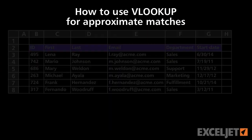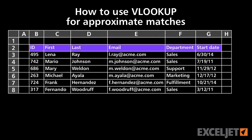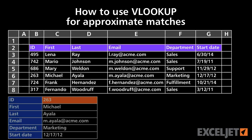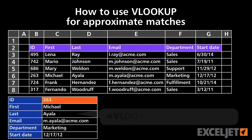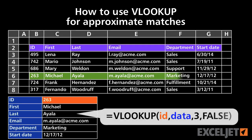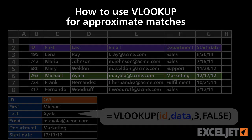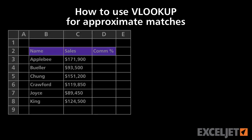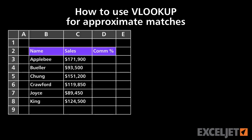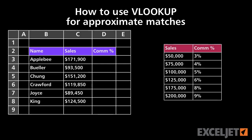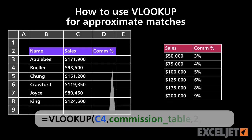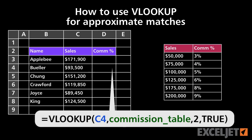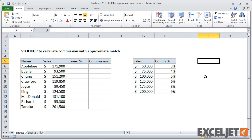In a lot of cases, you'll use VLOOKUP to find exact matches based on some kind of unique ID. But there are many situations where you'll want to use VLOOKUP to find non-exact matches. A classic case is using VLOOKUP to find a commission rate based on a sales number. Let's take a look.